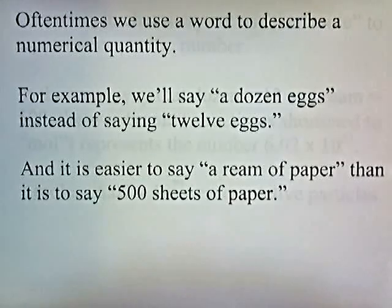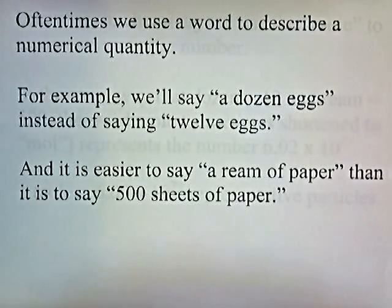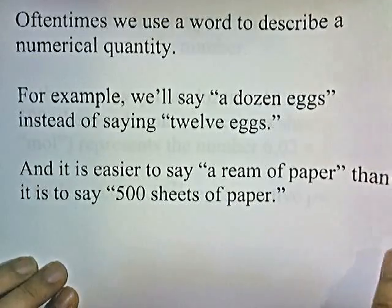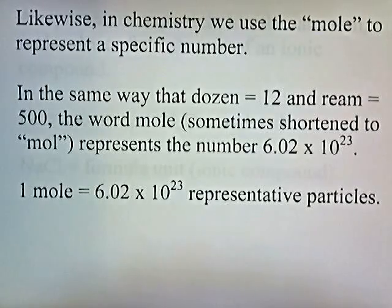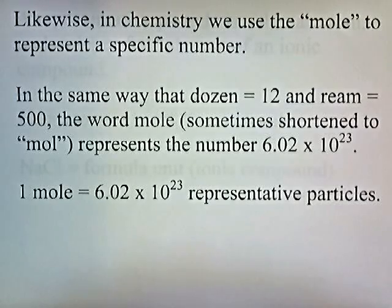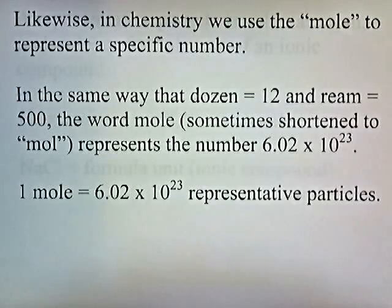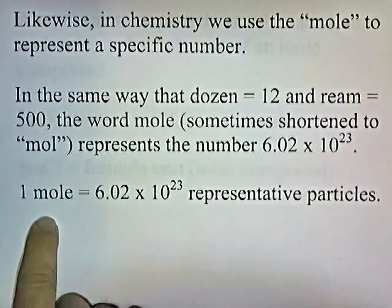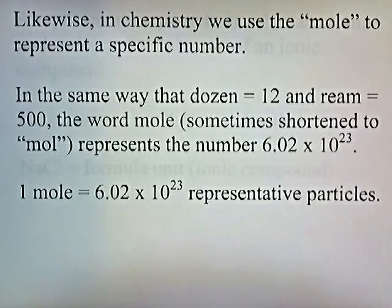Often times we use a word to describe a numerical quantity. For example, we'll say a dozen eggs instead of saying twelve eggs, and it's easier to say a ream of paper than it is to say five hundred sheets of paper. Likewise in chemistry, we use the mole to represent a specific number. In the same way that the word dozen means twelve and the word ream means five hundred, the word mole — sometimes shortened to MOL — represents the number 6.02 times ten to the twenty-third. So one mole is 6.02 times ten to the twenty-third.